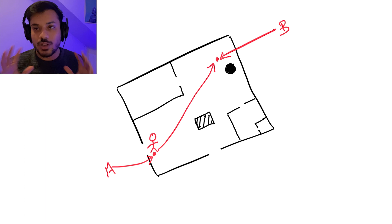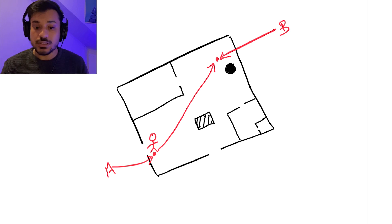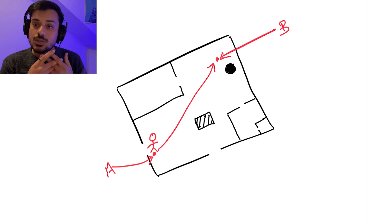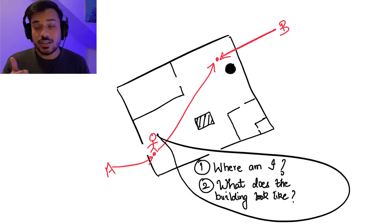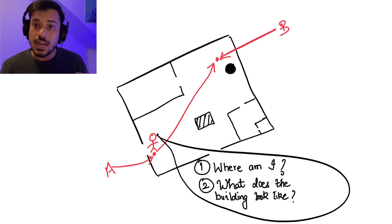Let's begin with the basic idea of navigation. What exactly is navigation in mobile robotics? Navigation for mobile robotics is a mobile robot moving from one point to another. But what does navigation actually entail? Let's forget about the robot for a minute and talk about a human. We put that person in a building and they have to move from point A to point B. The person has no idea what the building looks like, what's point A, what's point B.